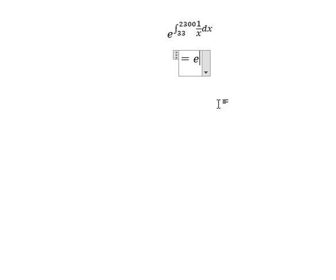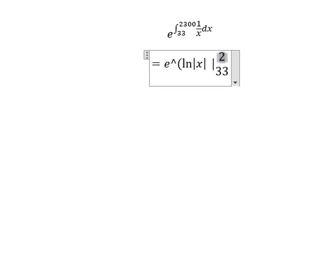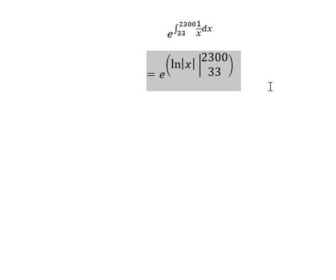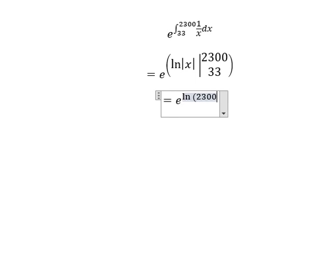We know that the integral of 1 over x gives us ln of the absolute value of x, and we put the bounds from 33 to 2300. So for this one we have ln of 2300 minus ln of 33.